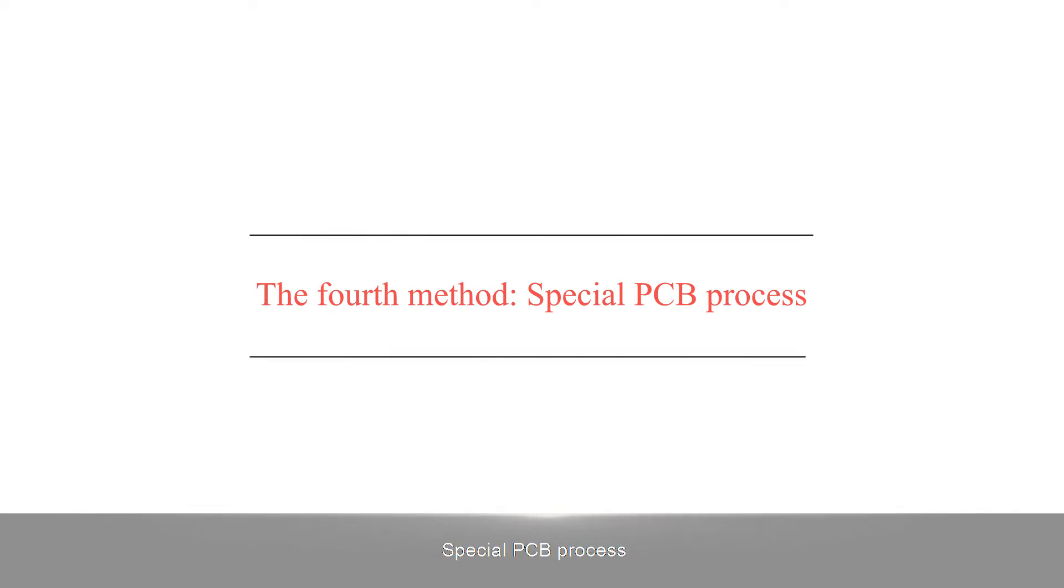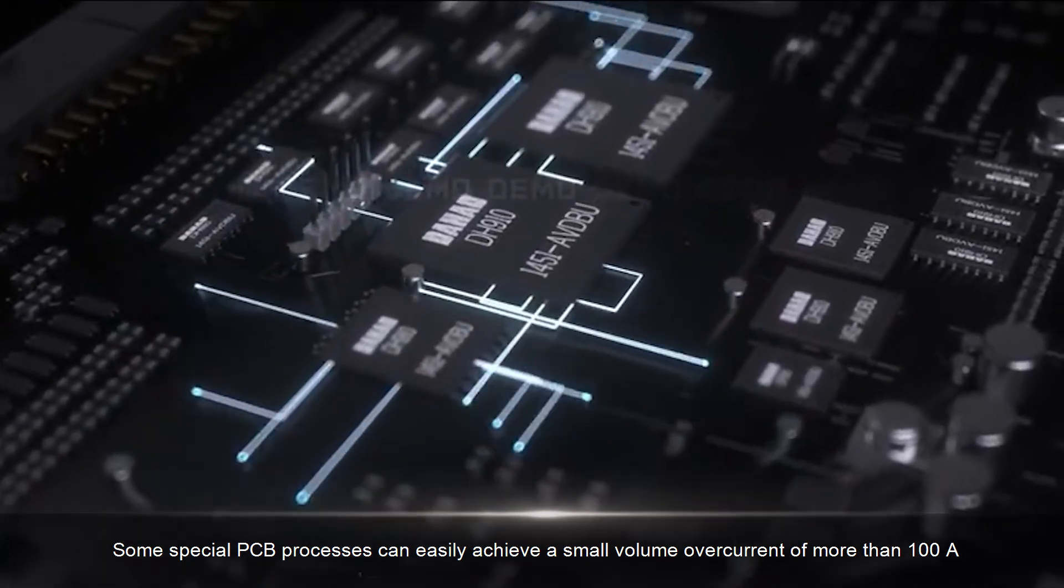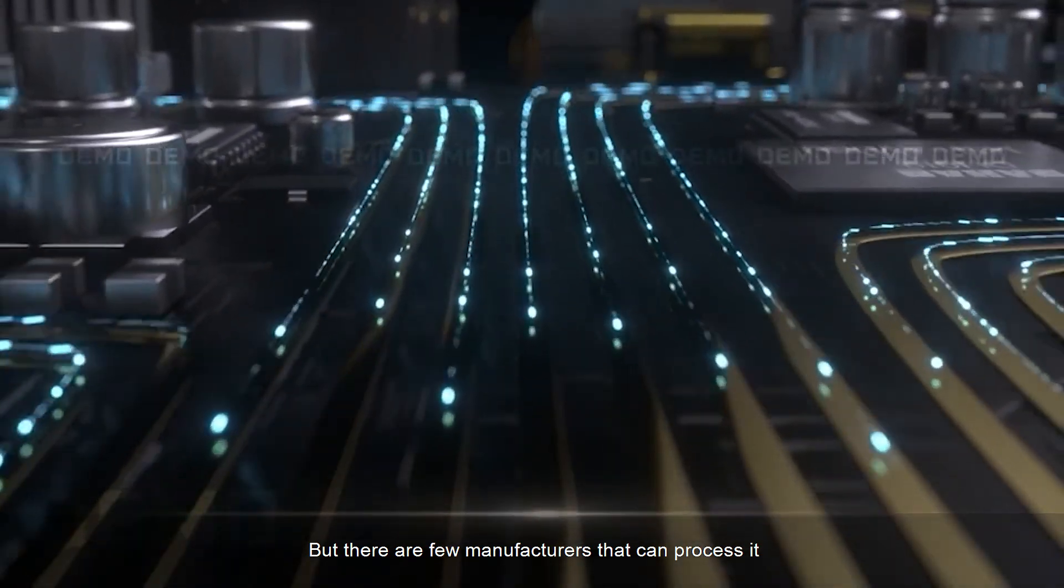The fourth method is special PCB process. Some special PCB processes can easily achieve a small volume overcurrent of more than 100A, but there are few manufacturers that can process it.